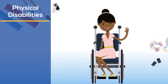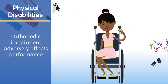Our next topic will be focused on physical disabilities. A physical disability, as defined by IDEA, is a severe orthopedic impairment that adversely affects a person's performance, either in skills of daily living or in an educational setting. Physical disabilities can either be congenital or acquired throughout life. We will be looking at three articles today, all covering different aspects of physical disabilities.